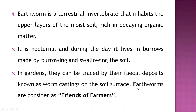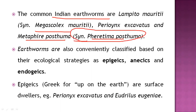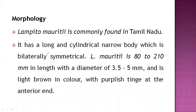We already discussed Indian earthworms. Pheretima posthuma is a common example given in the books. Earthworms are also classified based on ecological strategies as epigeic, anecic, and endogeic. Now we will discuss the morphology of earthworms. Our case study is Lampito mauritii, with a size of 80 to 210 millimeters.